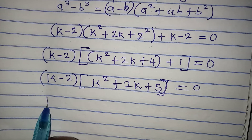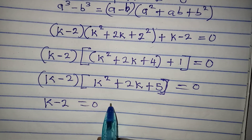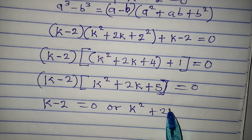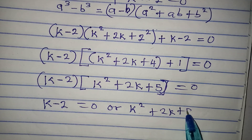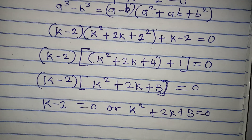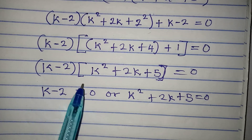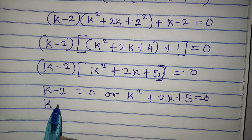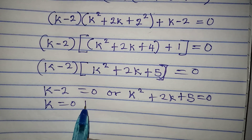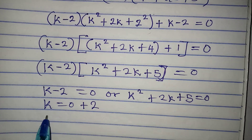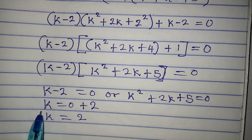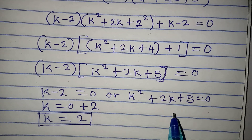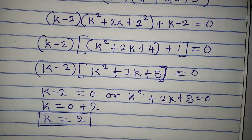Applying the zero product rule: either k minus 2 equals zero, or k² plus 2k plus 5 equals zero. From the linear equation, k equals 0 plus 2, so k equals 2. This is the first solution.